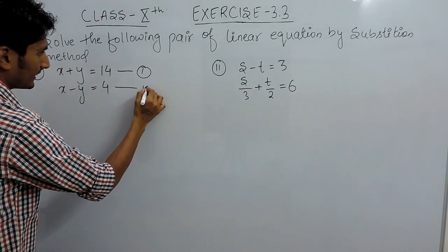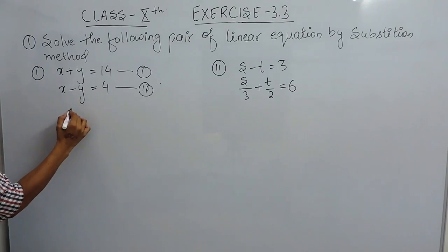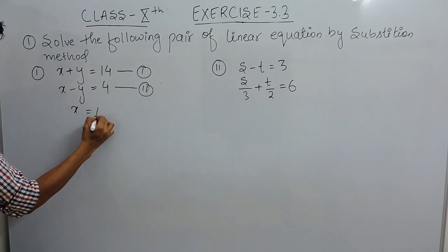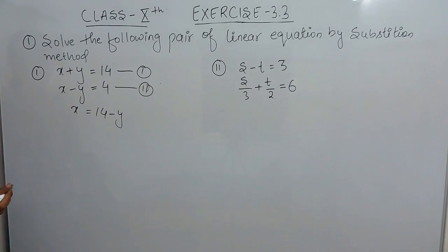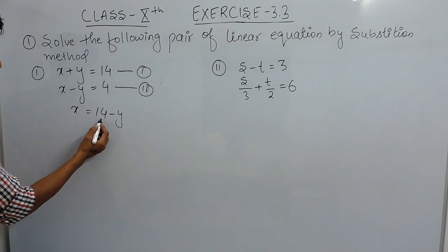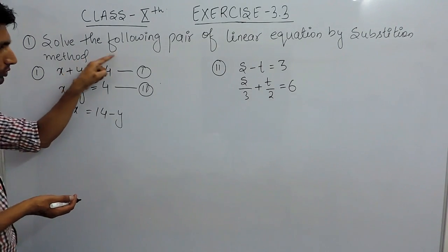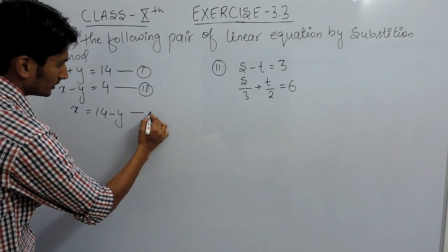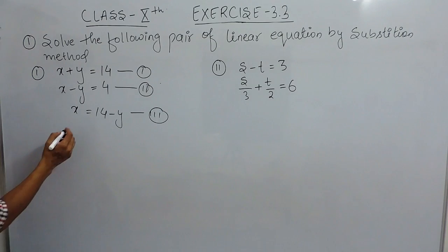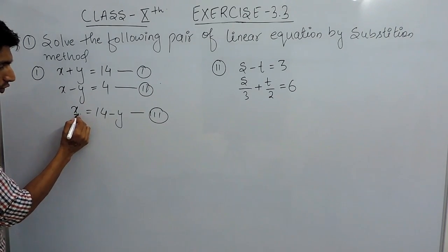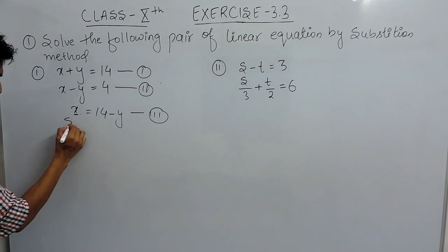This is the first equation and this is the second equation. What I am doing is finding the value of x in the first equation, which gives x equals 14 minus y — we are shifting y to the other side. This becomes equation three. After that, we have to substitute the value of x from equation three into equation two.